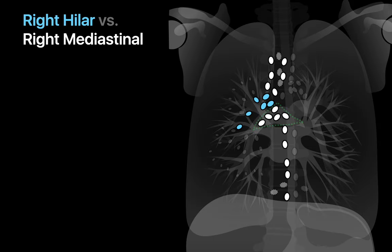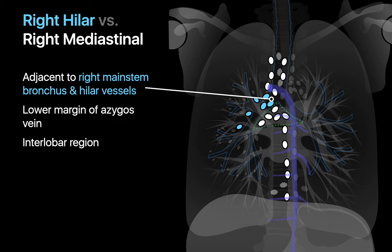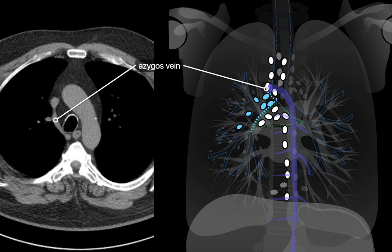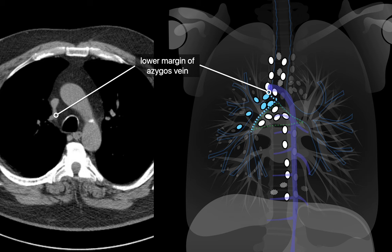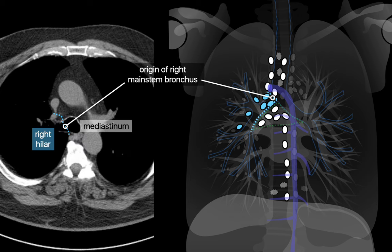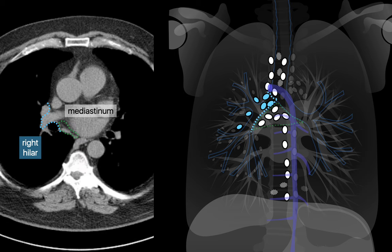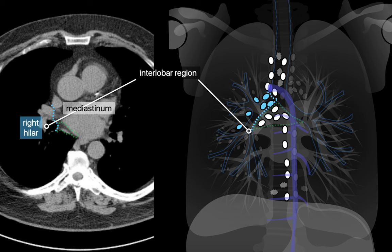When is a lymph node right hilar versus mediastinal? Right hilar lymph nodes are adjacent to the right mainstem bronchus and hilar vessels. The boundary between right hilar and right mediastinal nodes is defined by the right mainstem bronchus origin, the inferior margin of the azygos, and the interlobar region at the origin of the right middle and lower lobe bronchi. The right hilar station begins as soon as you pass through the inferior margin of the azygos, extending medially to the right mainstem bronchus origin, abutting the subcarinal station, and ending after the bifurcation of the bronchus intermedius.